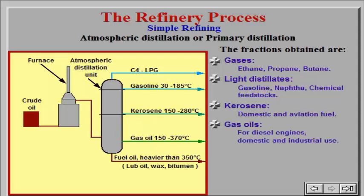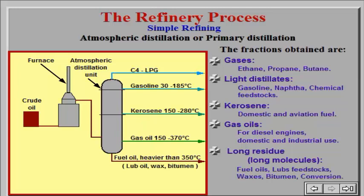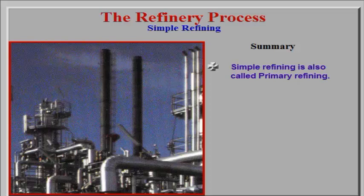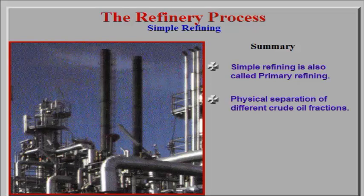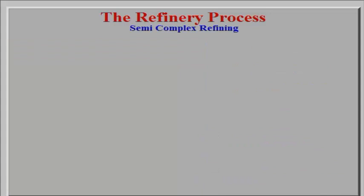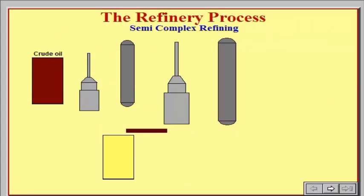Gas oils for diesel engines, domestic and industrial use. Simple refining is also called primary refining and is used for physical separation of different crude oil fractions. Separation pressure is atmospheric and the separation temperature is below 350 degrees Celsius.